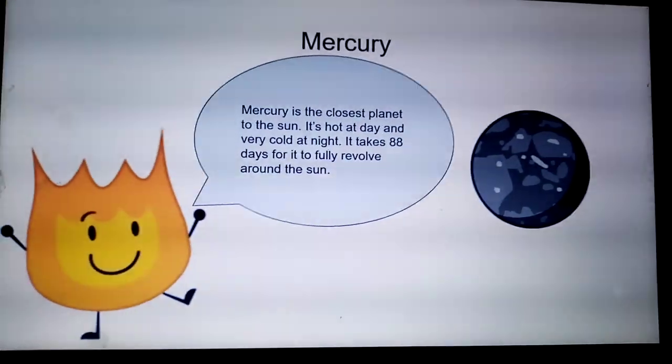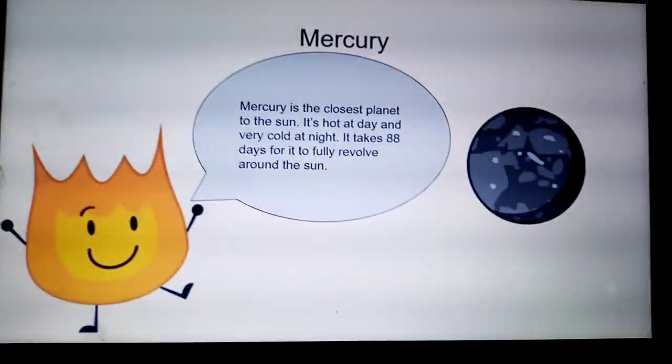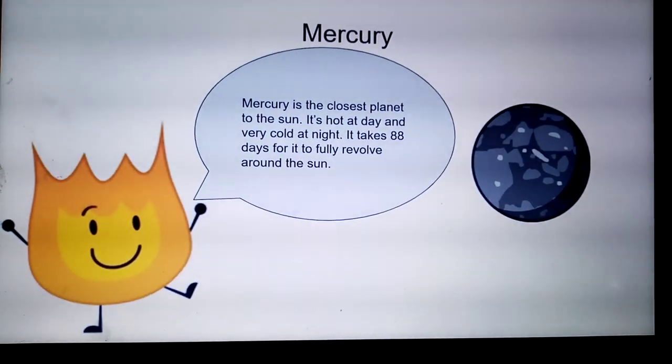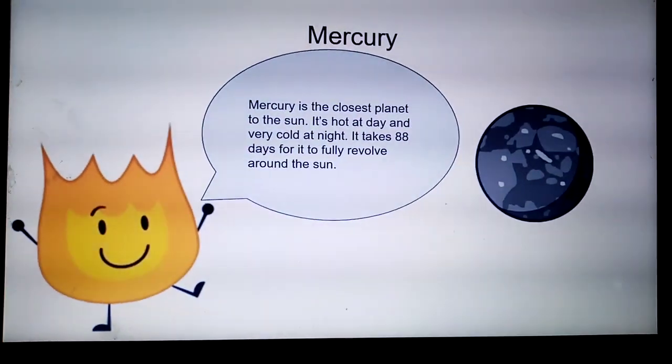Mercury is the closest planet to the sun. It's hot during the day and very cold at night. It takes 88 days for it to fully revolve around the sun.